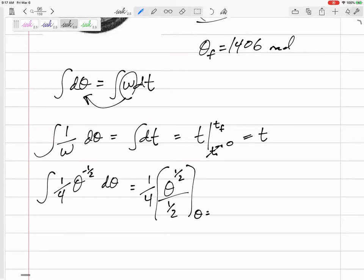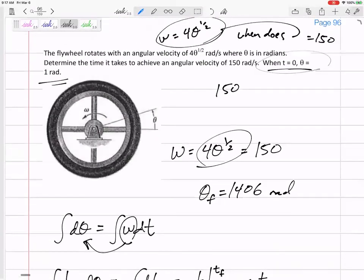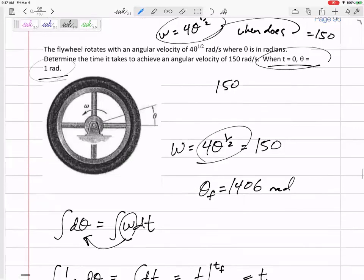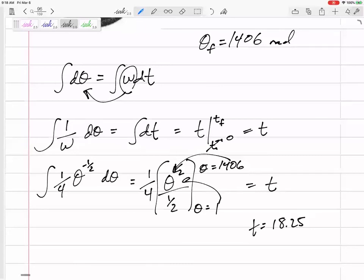But be careful. Theta is going from... It doesn't start at 0. See, this says theta starts at 1. So it's going from 1 to 1406 equals t. So plug in 1406 and then subtract what happens when you plug in 1. And then we would get the time. 18.25 seconds.